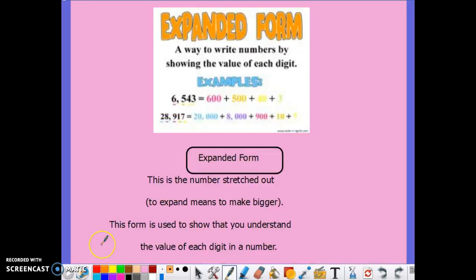The final way we can write numbers is expanded form. A way to write numbers showing the value of each individual digit by stretching the number out. To expand means to make something bigger. This form is used to show that you can understand the value of each digit within the bigger number.